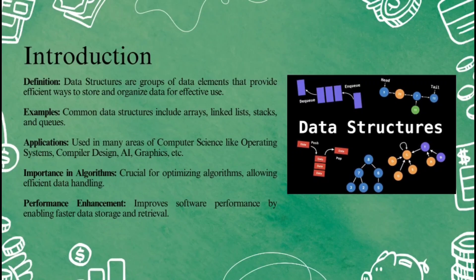Where are data structures actually used? Data structures are used everywhere in computer science. Here are a few places: Operating systems — they help manage tasks and memory. Artificial intelligence — they are used to manage complex networks of data. Games and graphics — data structures make things like animations and interactions fast and smooth.